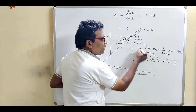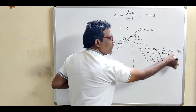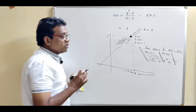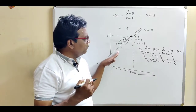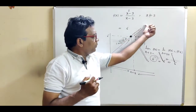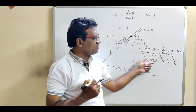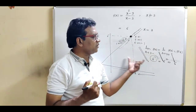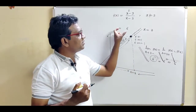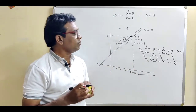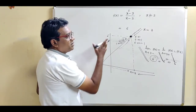Limit from left is 6, limit from right is 6, and value of function is 6. Since all three values are equal, the function is said to be a continuous function. This is the graphical representation of this example.